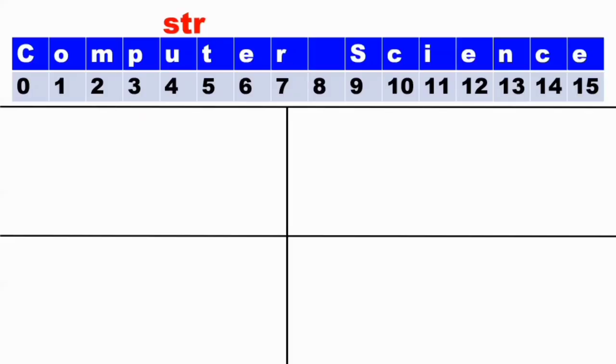We will see the string name: Str. The value of the string is computer science. This index starts at 0 and goes to 15. The total number of characters is 16. Now we will see what the question is.